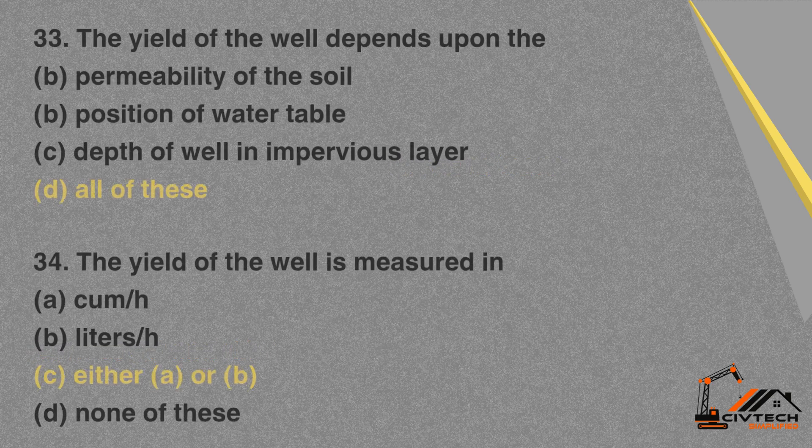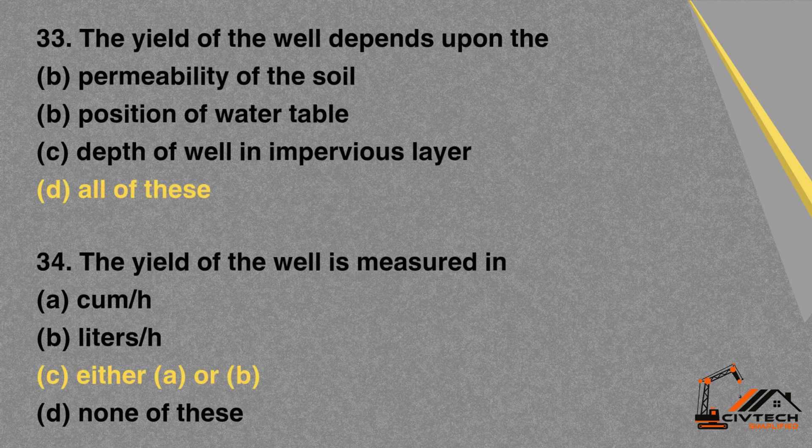MCQ 33: The yield of the well depends upon — A. Permeability of the soil. B. Position of water table. C. Depth of well in impervious layer. D. All of these. Correct option: D. All of these.